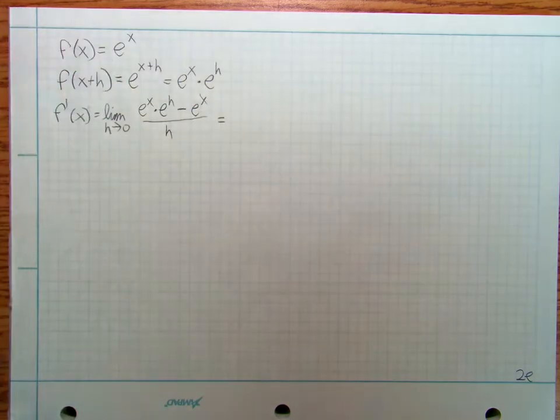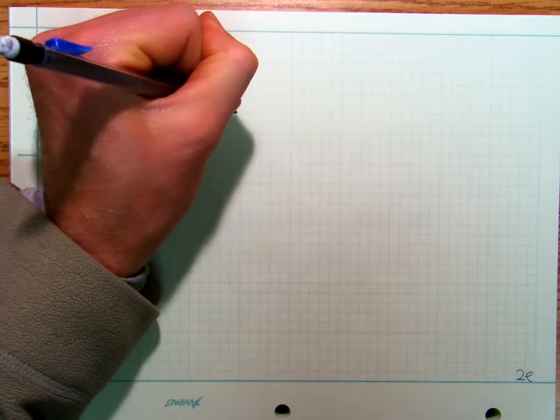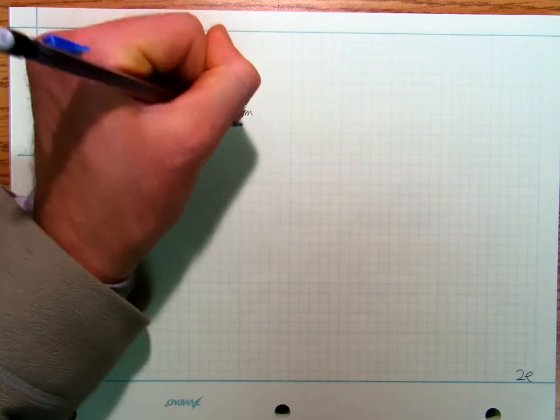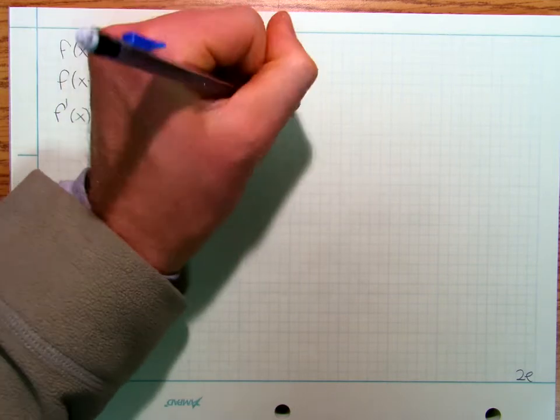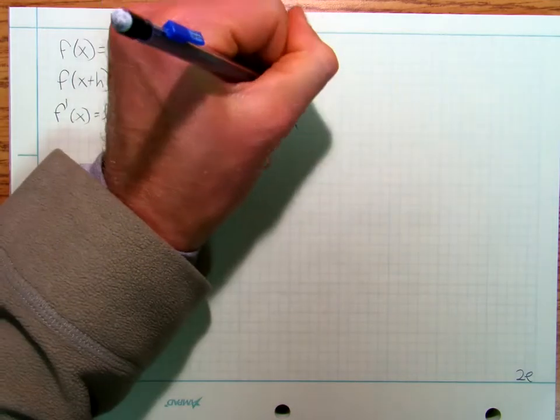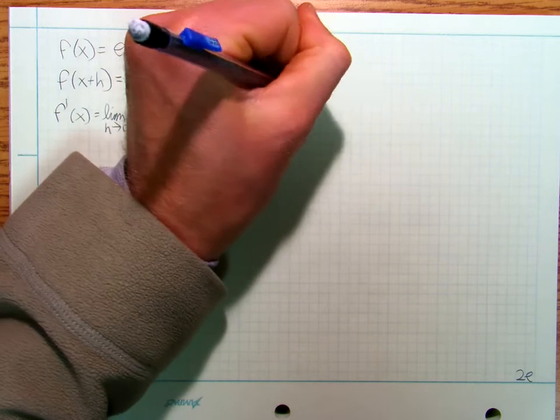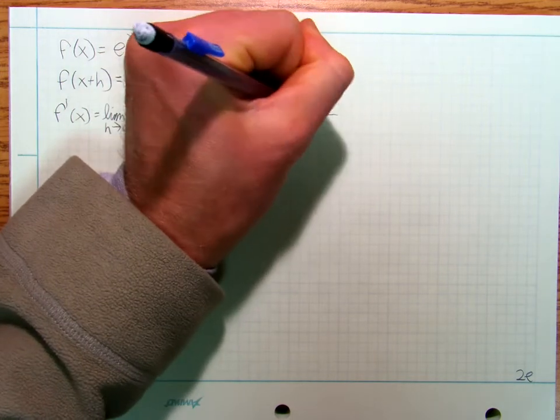So I'm going to write that as limit as h approaches zero of e^x times (e^h minus 1) over h.